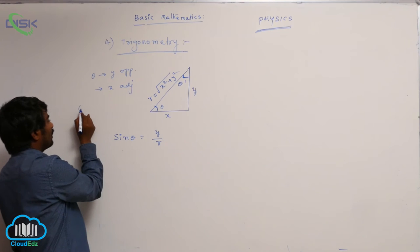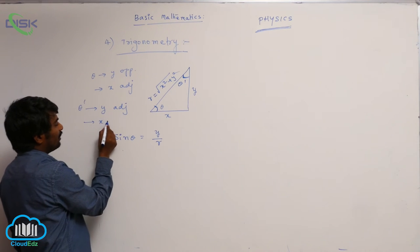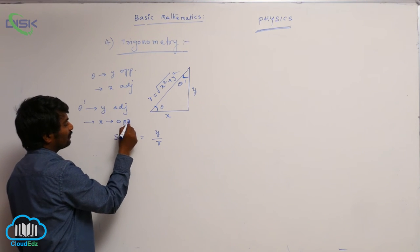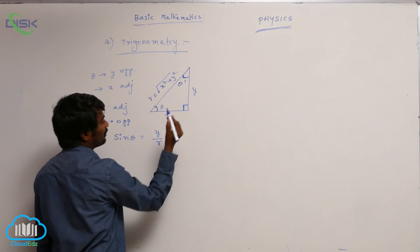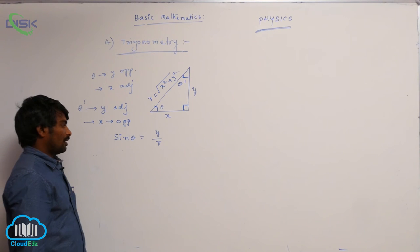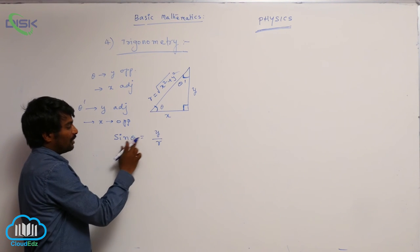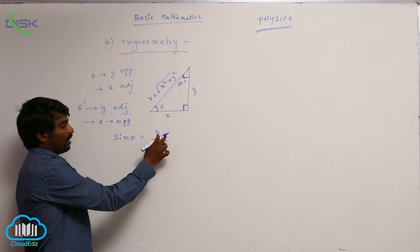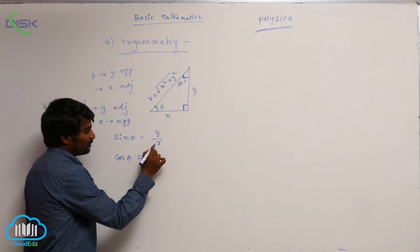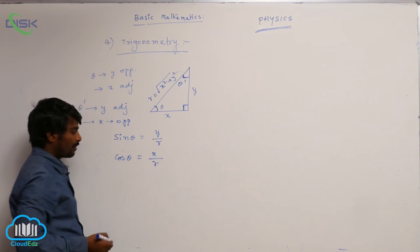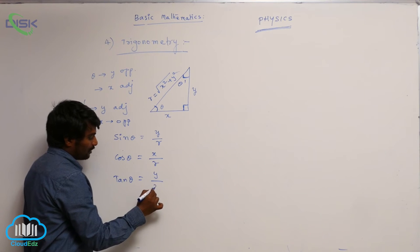Suppose if you take some other angle theta dash, for theta dash y is adjacent and x is opposite. The hypotenuse is opposite to the 90 degrees angle. Now defining trigonometric ratios for theta: sin theta equals y by r, that is opposite side by hypotenuse. Cos theta is equal to adjacent side by hypotenuse, and tan theta is equal to opposite side by adjacent side.